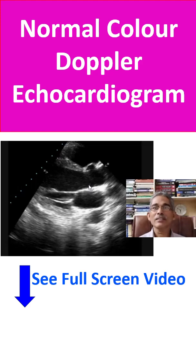Parasternal long axis view is obtained by keeping the transducer in the left parasternal region, where the lung does not cover the heart, with the beam of the echo transducer going from the base to the apex. So it is a slice from the base to apex.